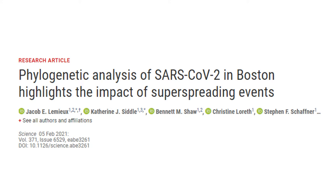A second super-spreading event was an international conference held at a Boston hotel in February. Ironically, the conference was about biotechnology. This two-day conference led to sustained community transmission, including outbreaks in homeless and other higher-risk communities. The transmission went beyond the Boston area — the virus was transmitted domestically and internationally, ultimately resulting in as many as 330,000 cases.